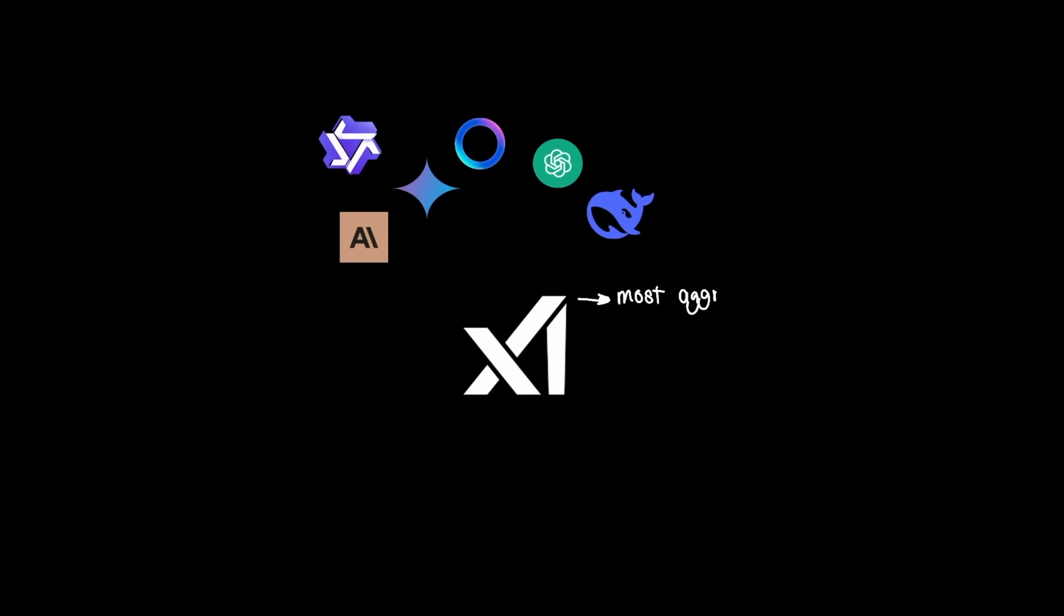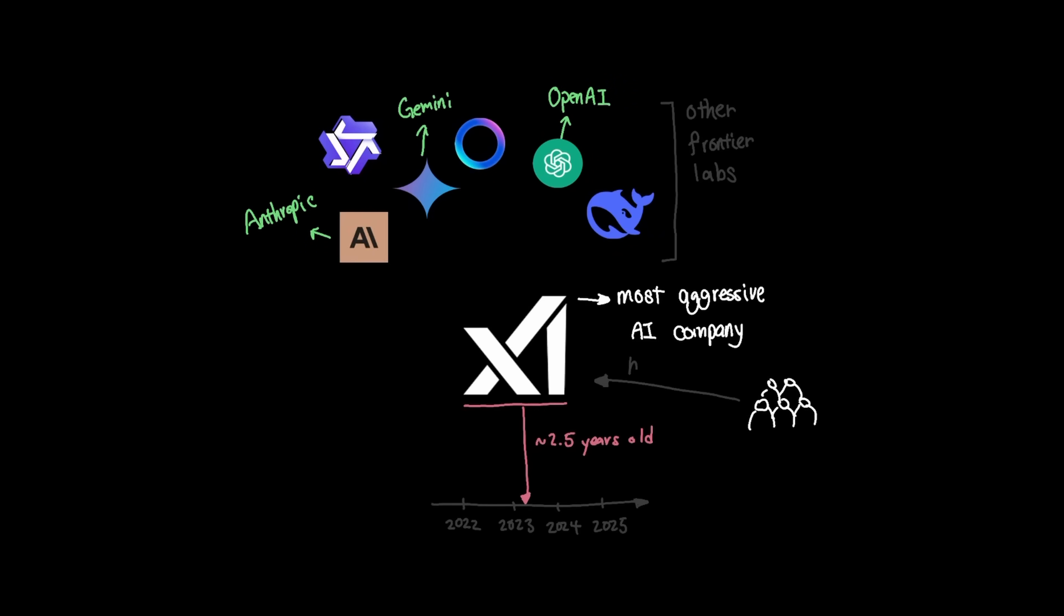xAI is probably the most aggressive AI company among other frontier labs that we have today. Considering that xAI was founded in March 2023, which makes them only two and a half years old, they're not only on par in competing with more dominant players like OpenAI, Gemini, and Anthropic, but xAI is also one of the most hated companies in the world.